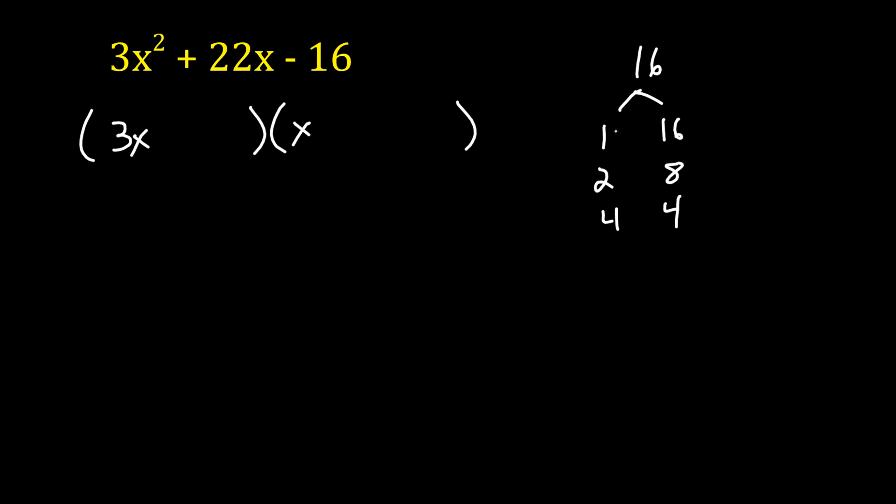On this one, 1 and 16 might be an option because that middle term is pretty big. So it's possible that that one might work. But if that middle term were like a 2x, then 1 and 16 would be a pretty bad choice. So let's try that one. If I do 1 and 16 here, I can tell right away that's not a good choice because 3 times 16, that's going to be 48x. 1 times x is 1x. That's not going to give me 22. If I flip around the 1 and the 16, that's going to be 16x and 3x. That's not going to give me 22 either. But that one's pretty close. That's 19x. So that's why it wasn't a terrible idea.